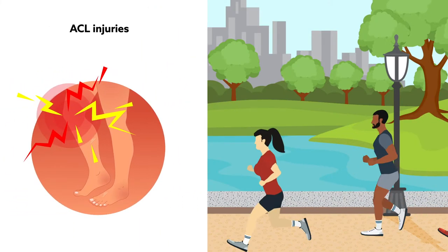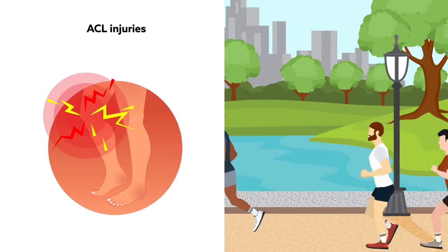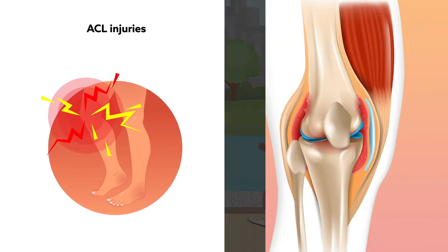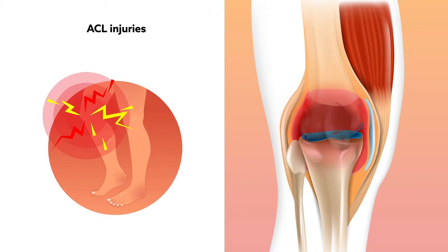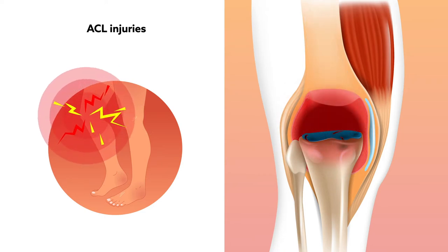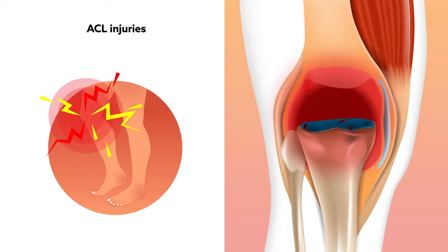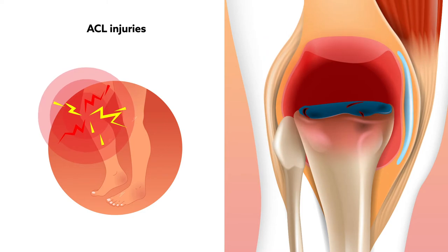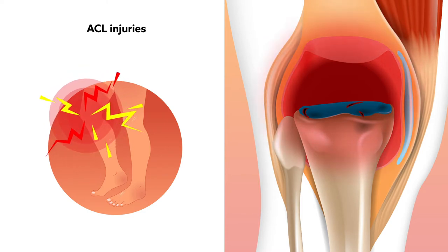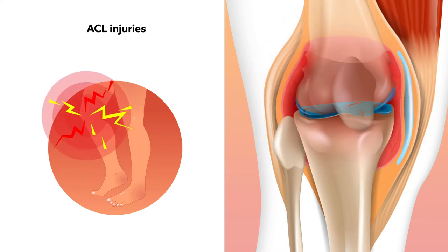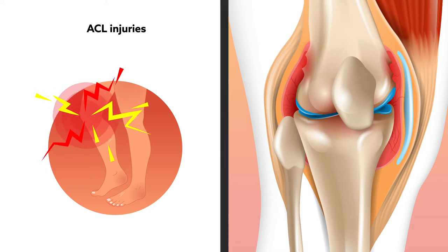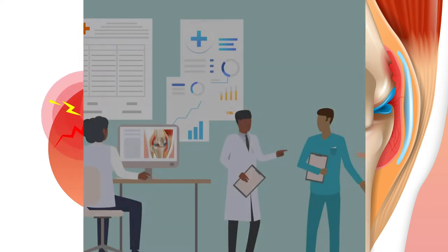ACL injuries are common among athletes of all types. Often they're associated with ramp lesions, injuries to the medial meniscus which cushions the femur and provides stability to the knee joint. Unfortunately, ramp lesions often go undiagnosed, and the most appropriate course of treatment is the subject of much debate.